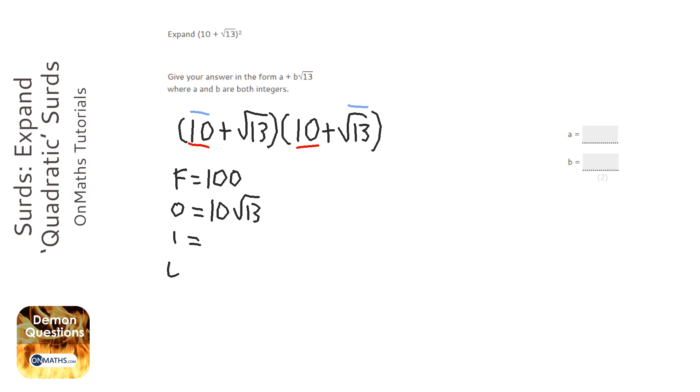Then the two inside ones, which is going to be this one and this one, which is root 13 times 10, which is also 10 root 13. And the two last ones, which are going to be that root 13 and that root 13 there. Now, when you times a surd by itself, you actually just get the number. So if you think about it, with surds,